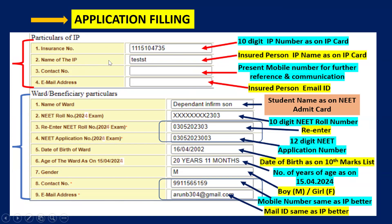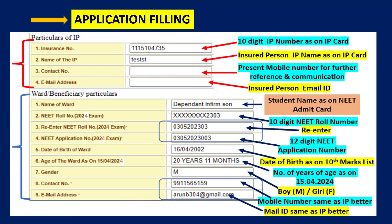Next is the name of the IP, which should be the same as the name on the ESIC IP card. Next is the contact number — you should provide a contact number for further reference and communication. Then enter your email address. Note that this contact number may not necessarily be the same as the linked mobile number to your ESIC account, as it is used for further reference and communication.